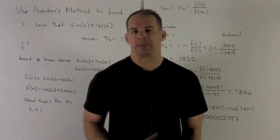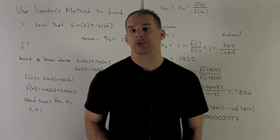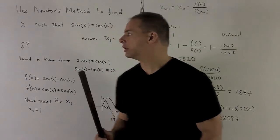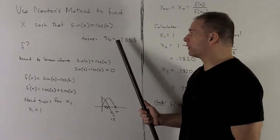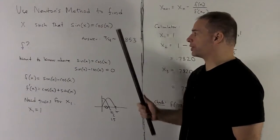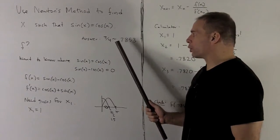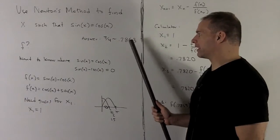Use Newton's method to approximate x where sine of x equals cosine x. So we know our answer already. It's going to be pi over 4. It's going to give us both square root of 2 over 2. Pi over 4 in radians is roughly 0.7853.